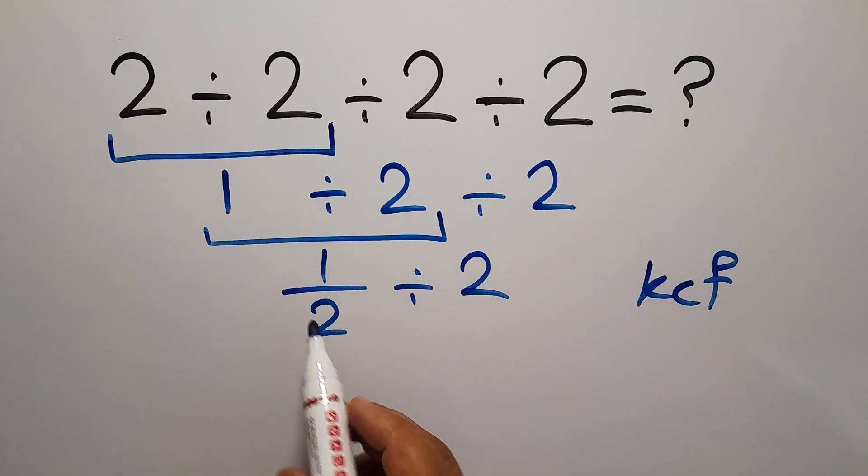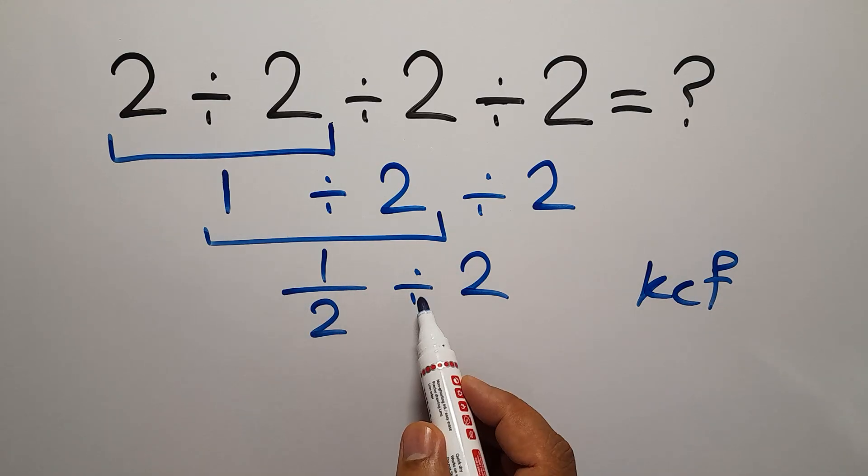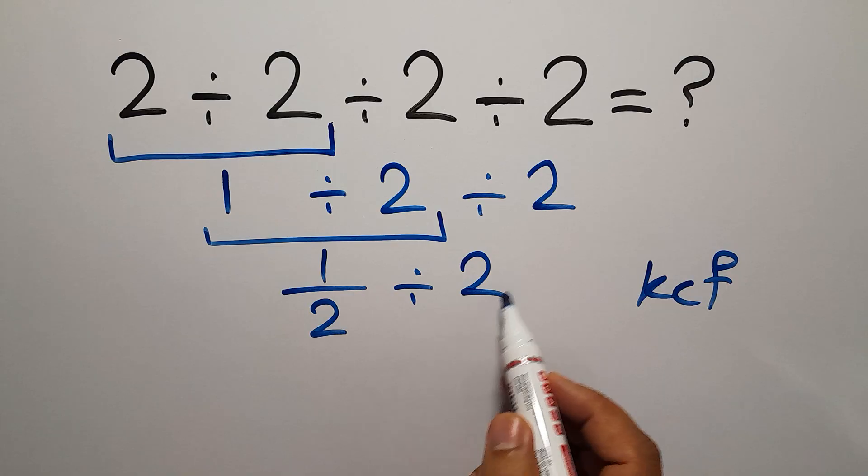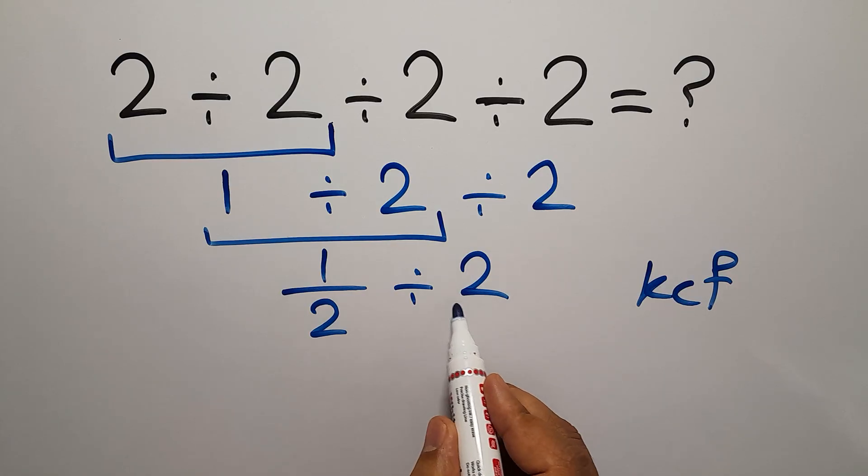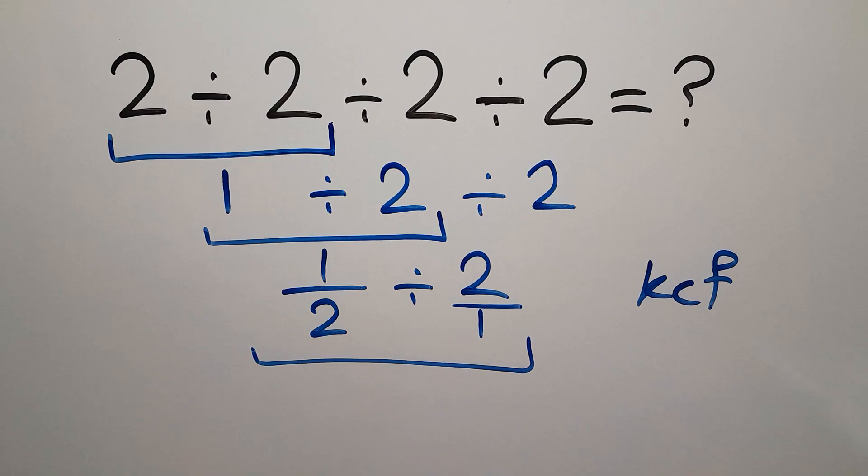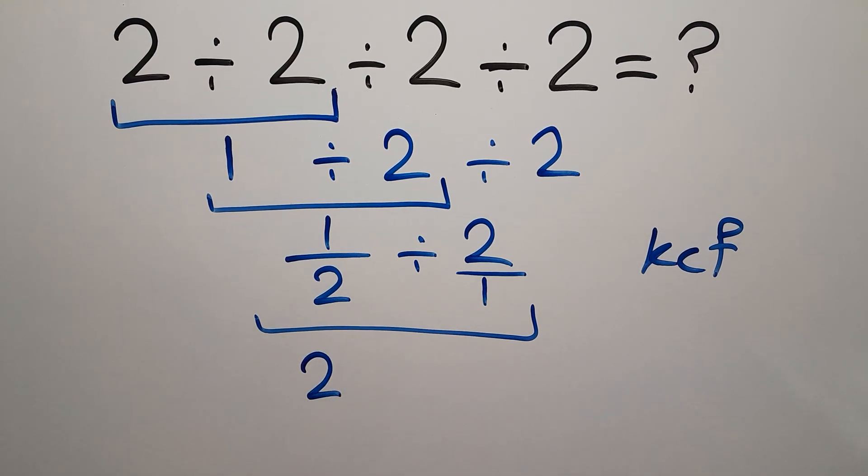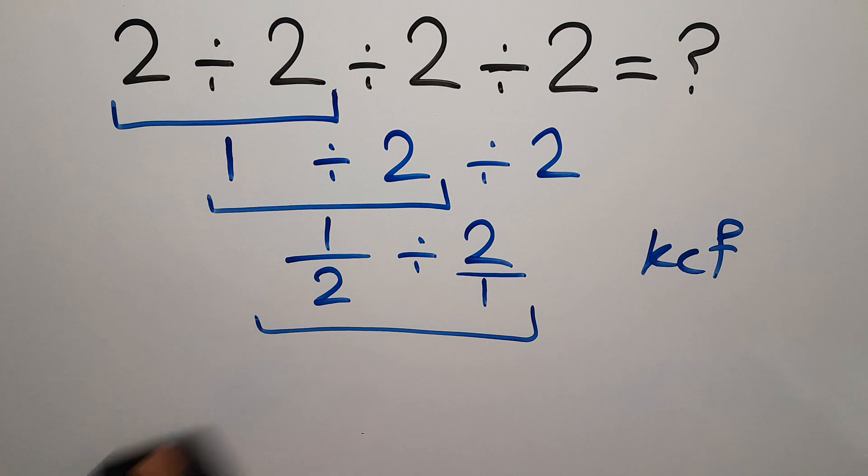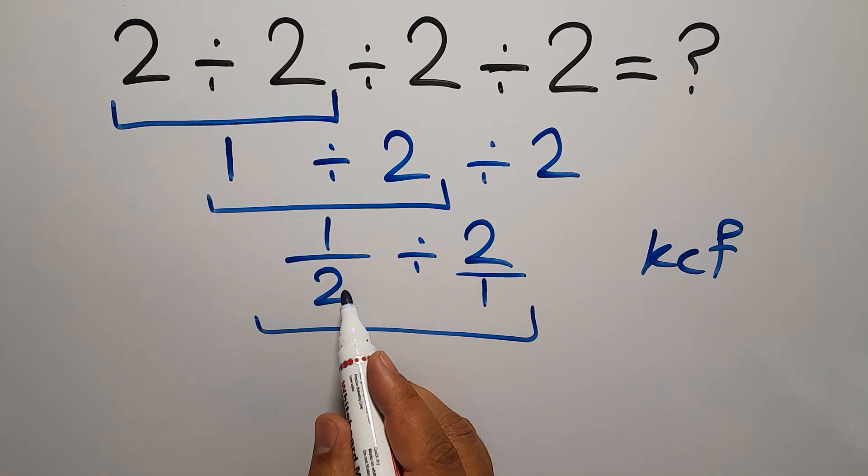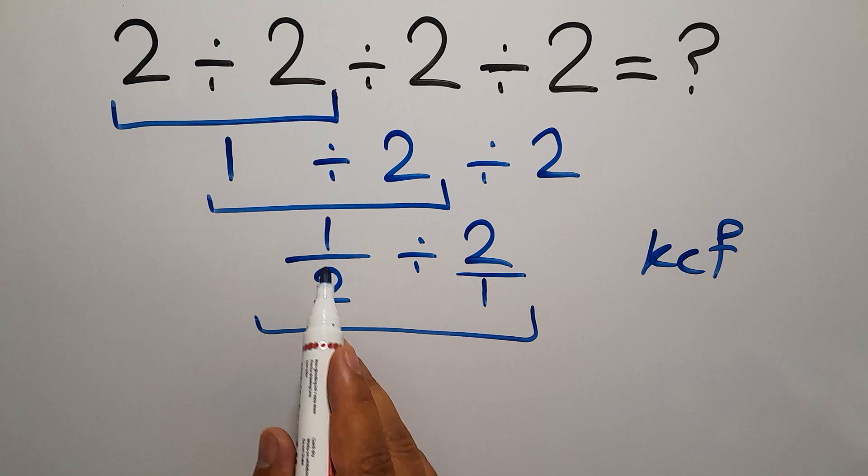Keep the first fraction, change division to multiplication, and flip the second fraction which is 2 over 1. We have to keep the first fraction which is 1 over 2, so 1 over 2.